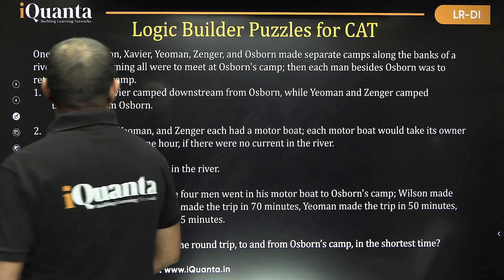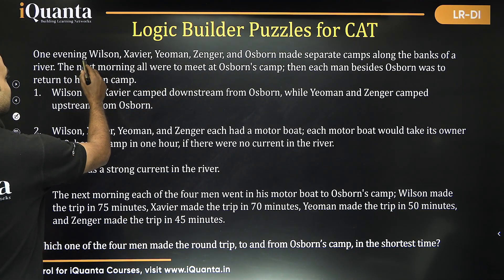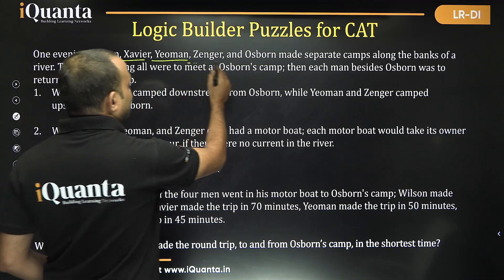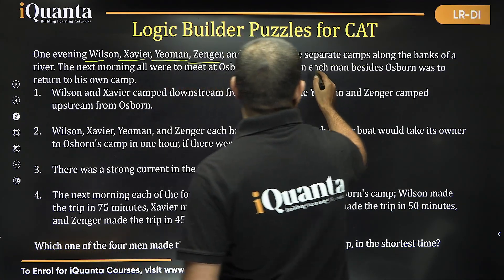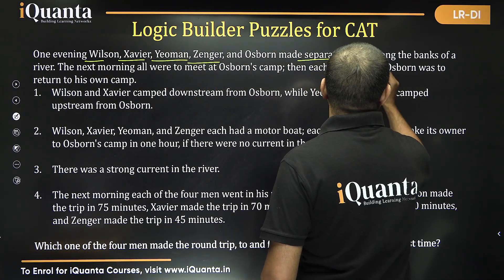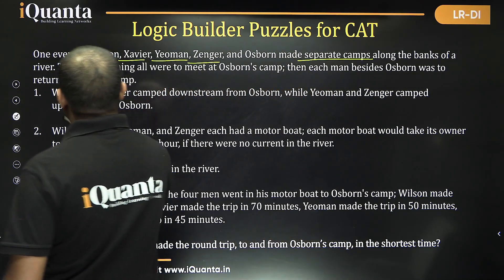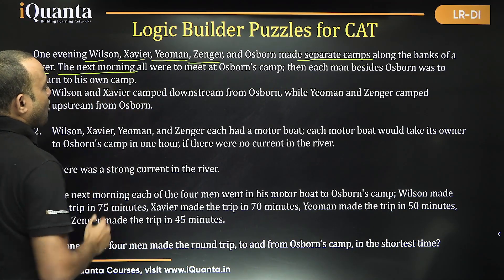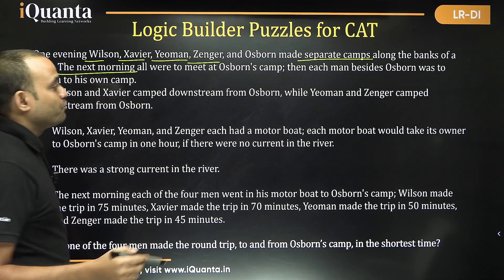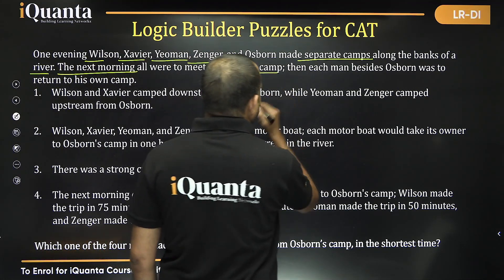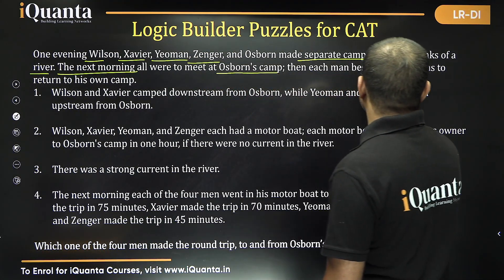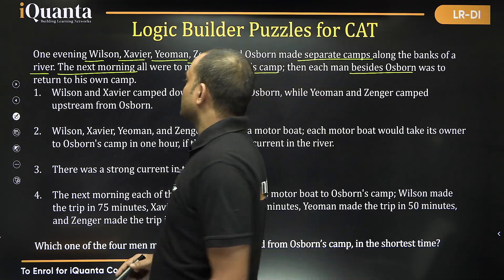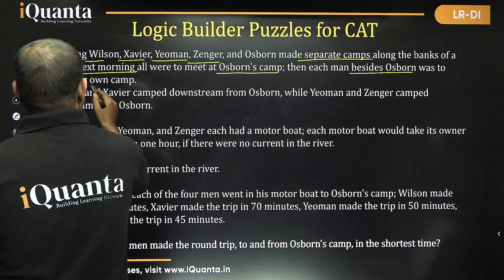One evening, Wilson, Xavier, Yeoman, Zenger, and Osborne made separate camps along the banks of a river. The next morning, all were to meet at Osborne's camp, and then each man besides Osborne was to return to his own camp.